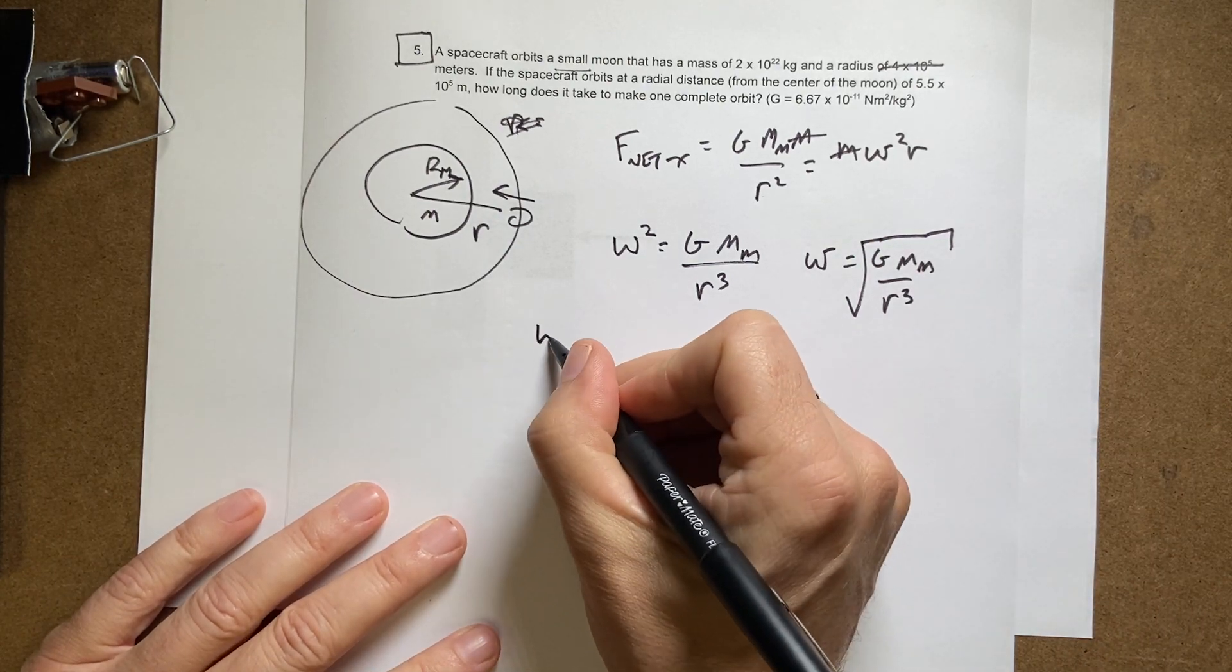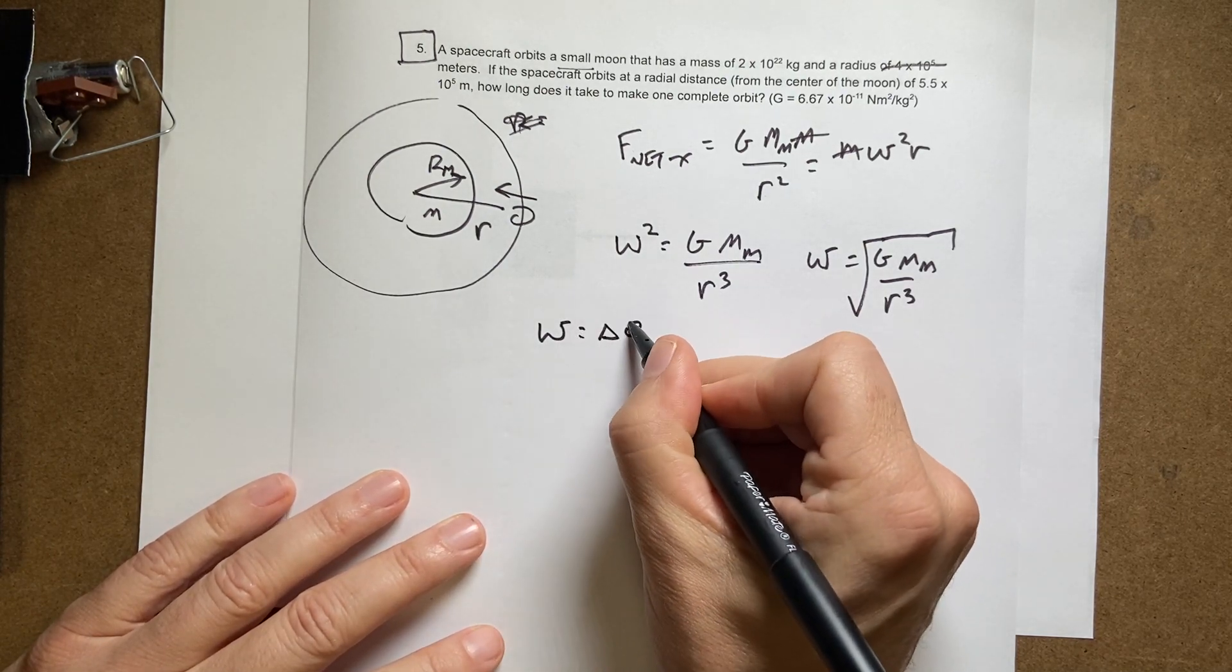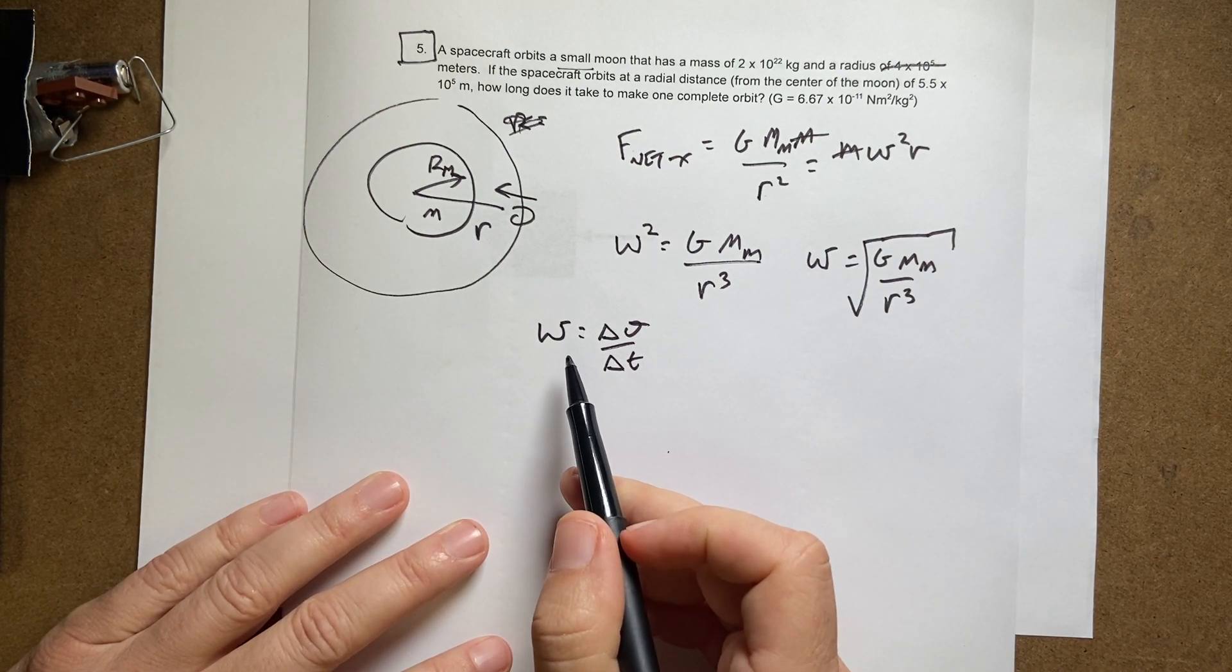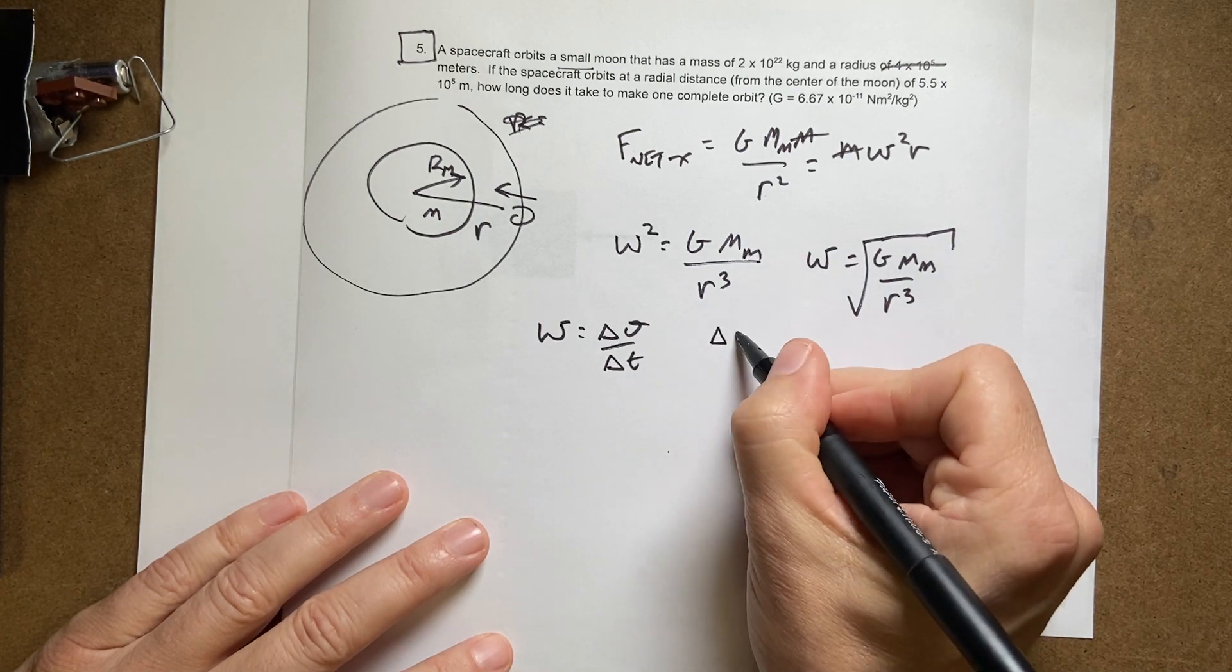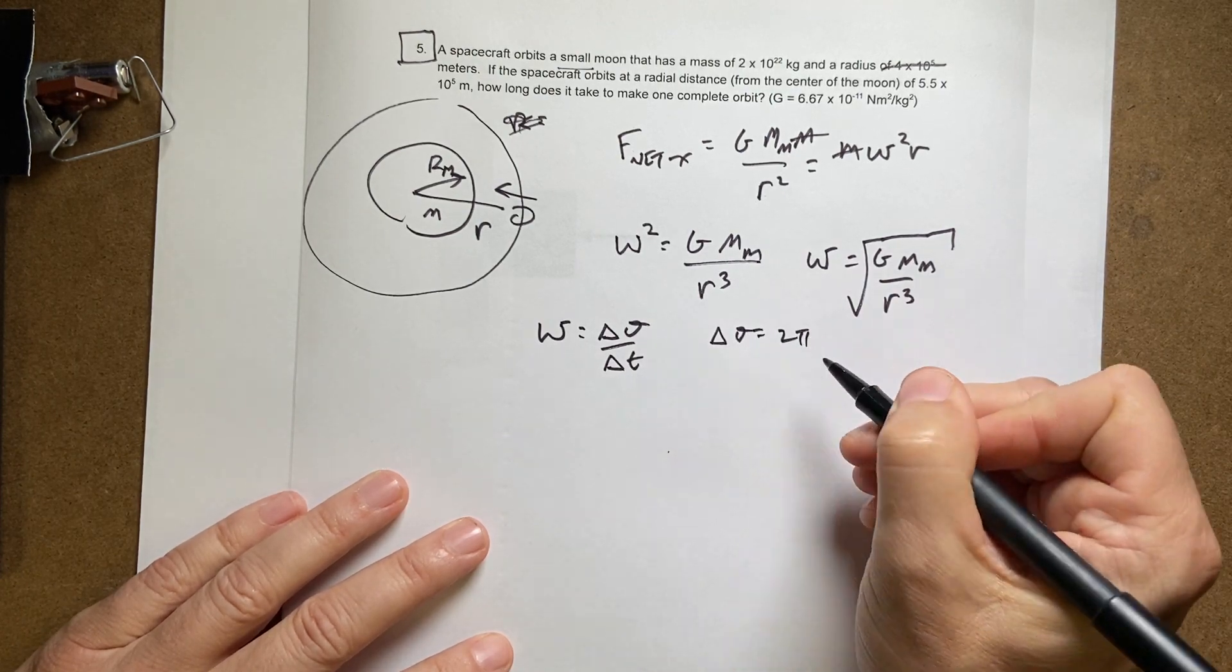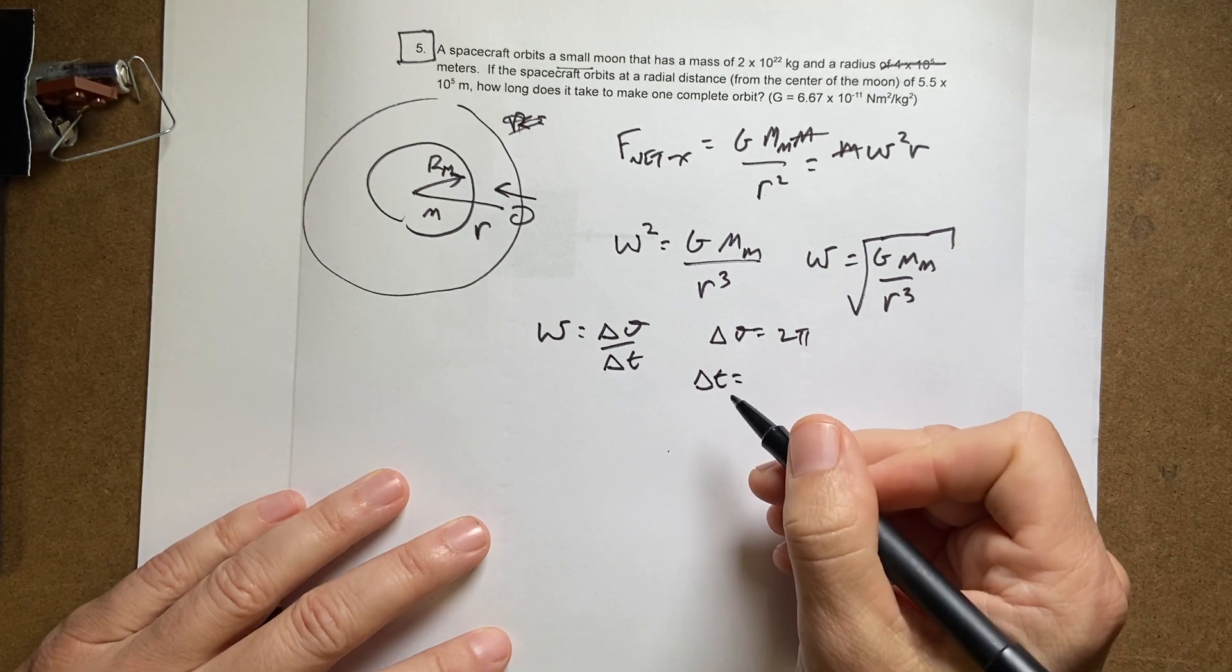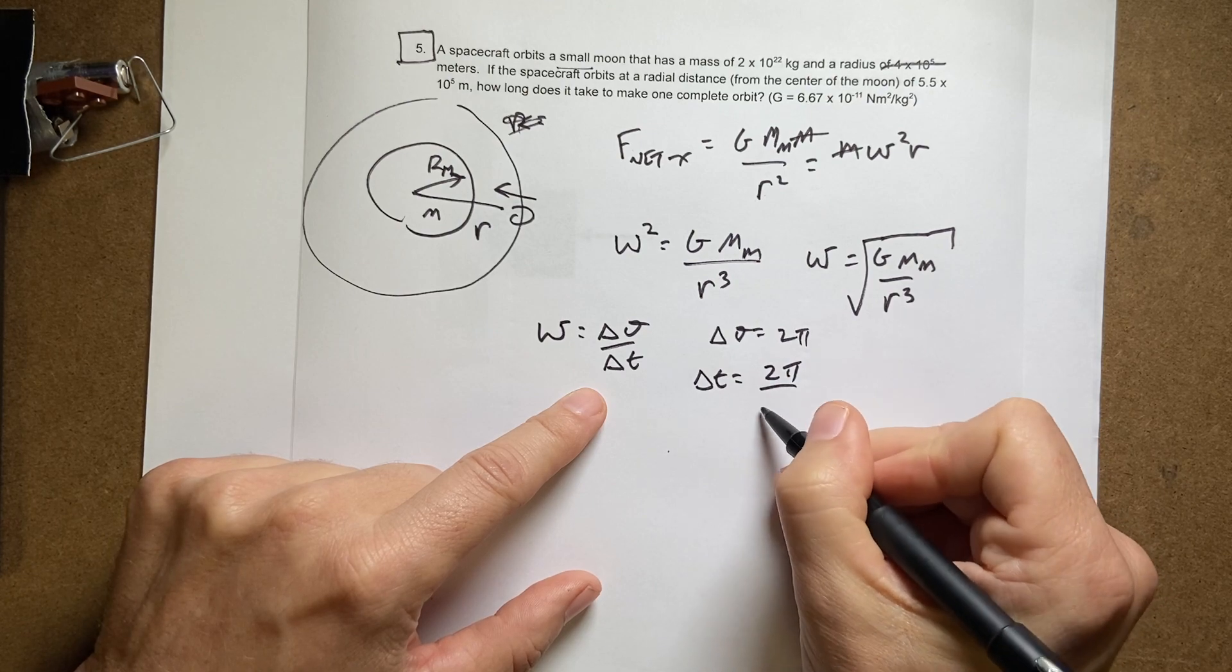And then let's not even put the number in, because now I can say omega is delta theta over delta t, right? That's the definition of angular velocity. And so if it goes all the way around, how far is that? That's delta theta equals 2 pi. So what would delta t be? Delta t would be the time it takes to make one orbit, and it would be 2 pi over omega.